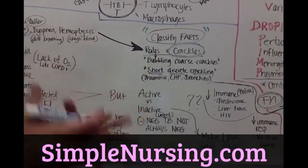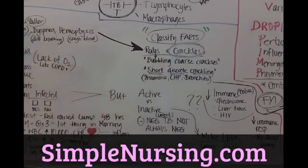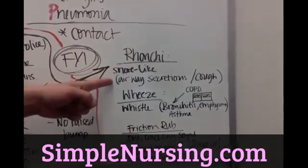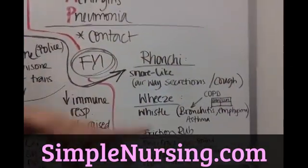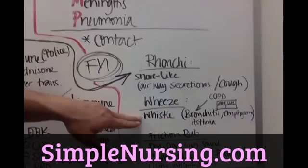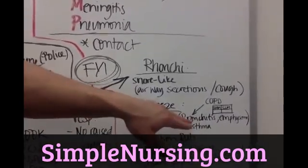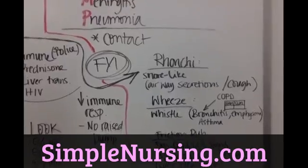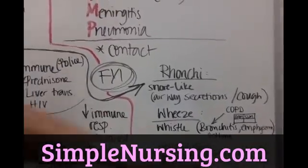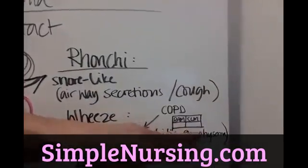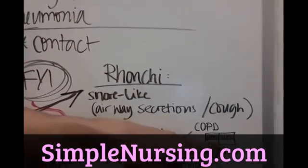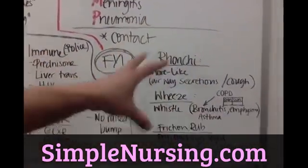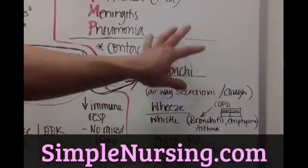Rales and crackles are two different things, but they're pretty much in the same family — a large and small type of problem. For your information: rhonchi are snore-like airway secretions that are cleared with a cough. Wheezing is almost like a whistle and is usually from bronchitis, emphysema, but mostly we see it in acute asthma. This is cleared up with BAM and SLAM drugs — bronchodilators and anti-inflammatory drugs for your COPD patients.